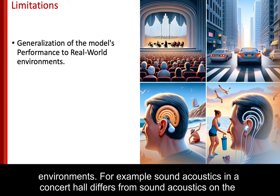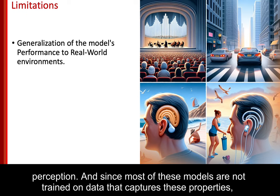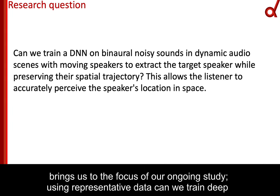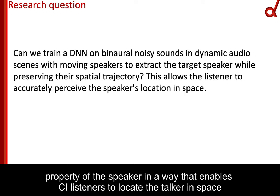For example, sound acoustics in a concert hall differ from sound acoustics on the road or at the beach. Also, listener-specific properties, such as the shape of the ear, affect perception. Since most of these models are not trained on data that captures these properties, their performance doesn't hold up in the real world. This brings us to the focus of our ongoing study: using representative data, can we train deep learning models to extract the speech of a target speaker while retaining the spatial properties that enable CI listeners to locate the talker in space?